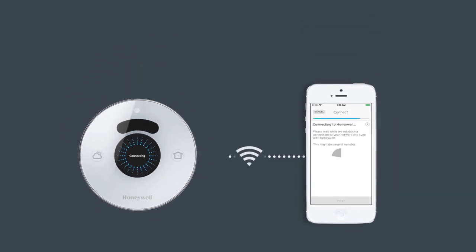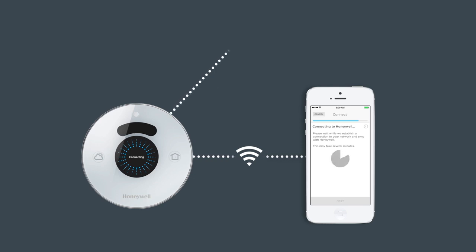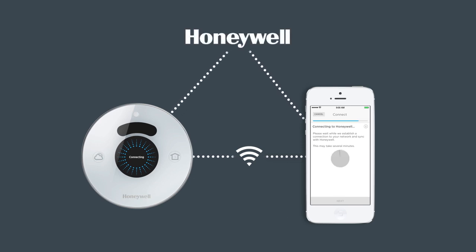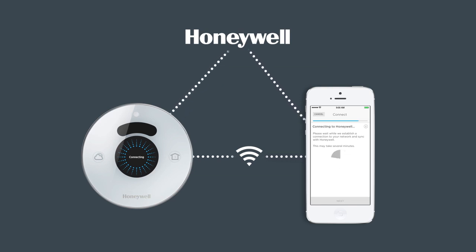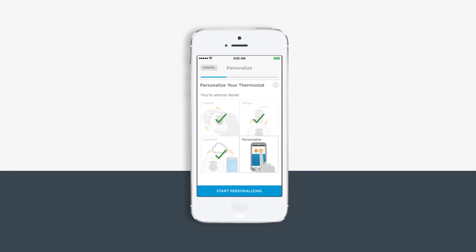Your thermostat is now connecting with your home Wi-Fi network. It may take several minutes to establish a connection to your network and sync with Honeywell. If an error appears on your thermostat screen, touch 'Connect' again to reestablish the connection.